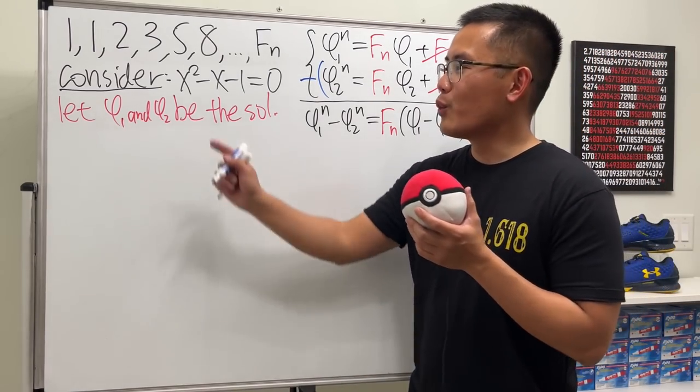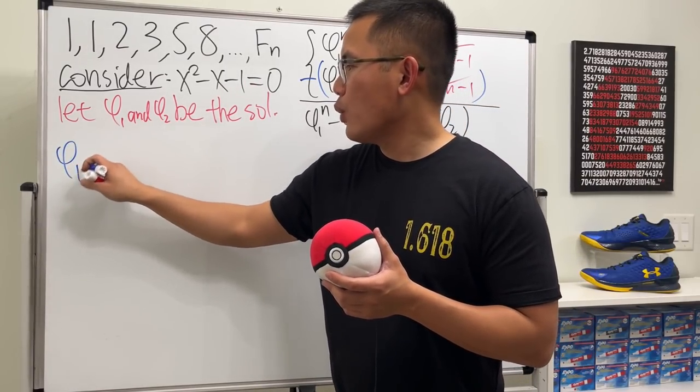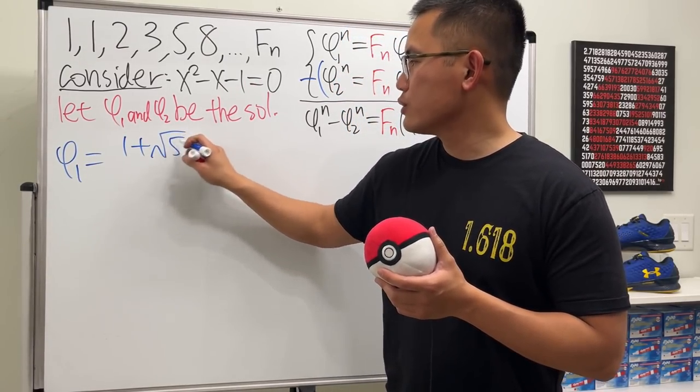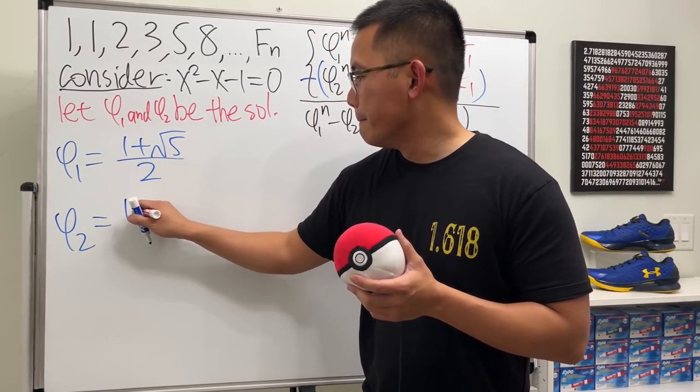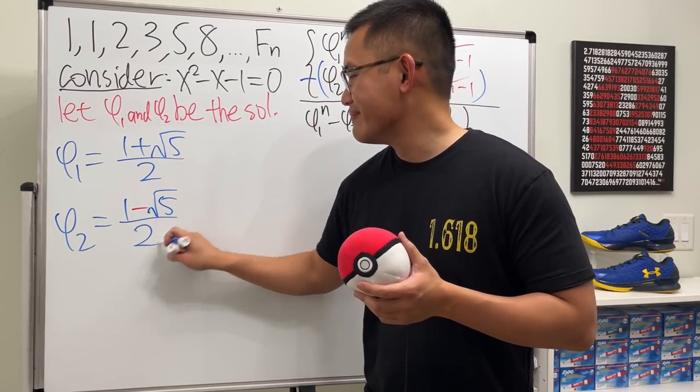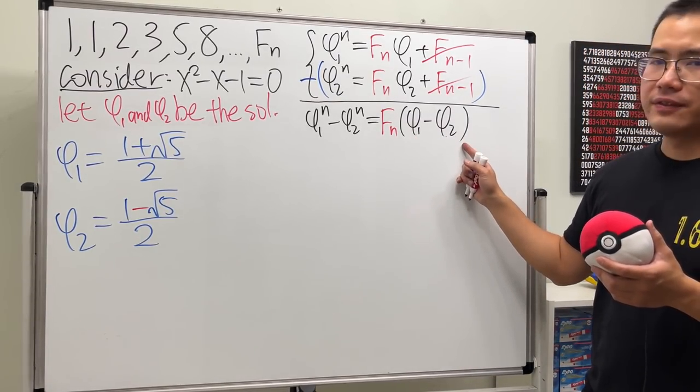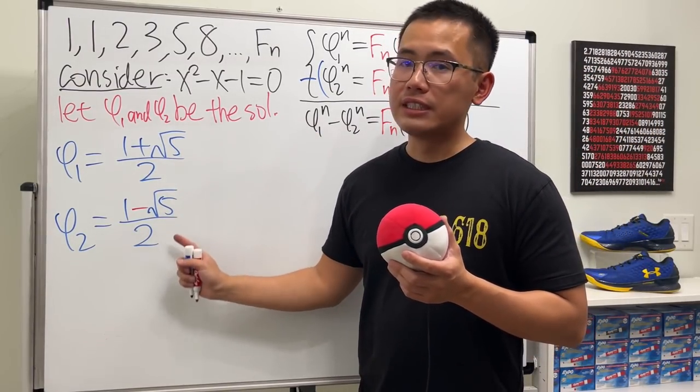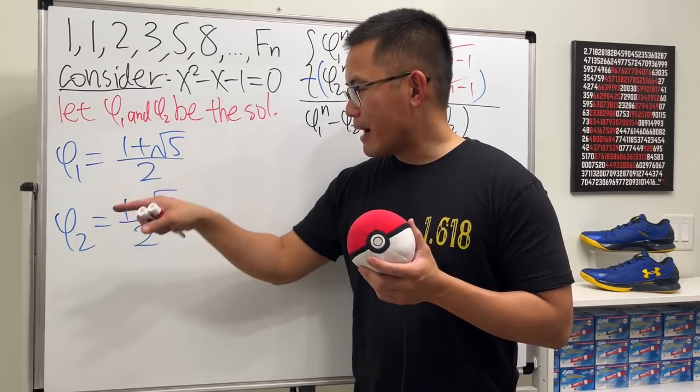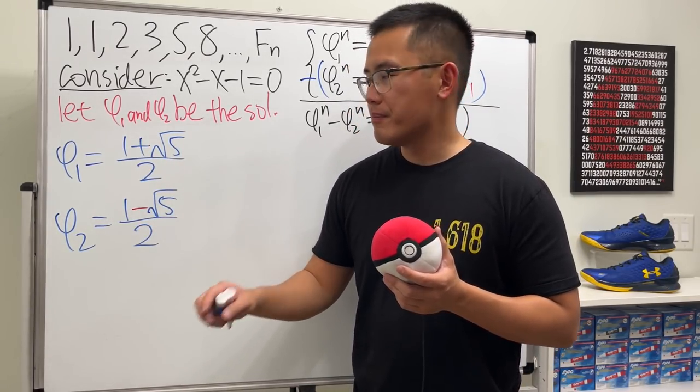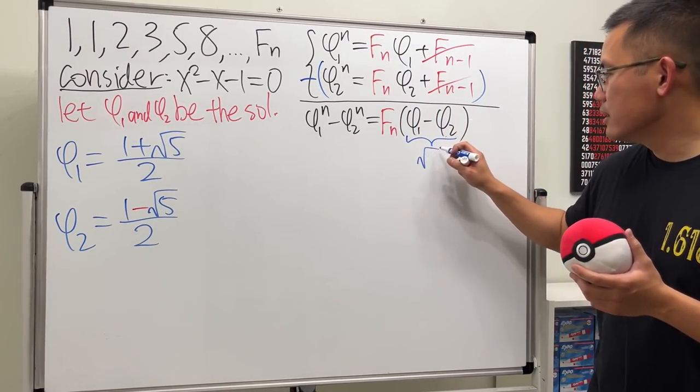So now let's actually figure out what φ₁ and φ₂ are. And, of course, we just have to solve this quadratic equation. And let's say φ₁ is the golden ratio, which is one plus square root of five over two. And then for φ₂, well, this is just one minus square root of five over two. And right here, we will have to get φ₁ minus φ₂. This minus that, they have the same denominator already, so we just do one minus one, which is zero. Square root of five minus a negative square root of five is two square root of five, but we have a two on the bottom. So all in all, this minus that is just a square root of five.